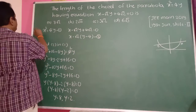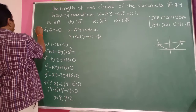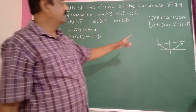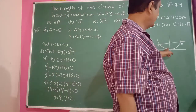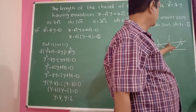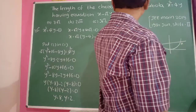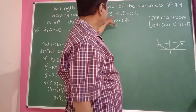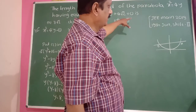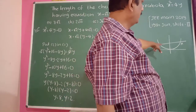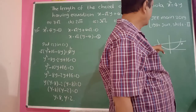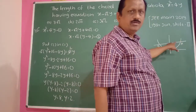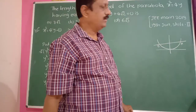So here is the solution. x² = 4y is the parabola, and the equation of this chord is x minus √2·y plus 4√2 equals 0. The chord cuts the parabola at two points A and B. We need to find the coordinates of A and B.